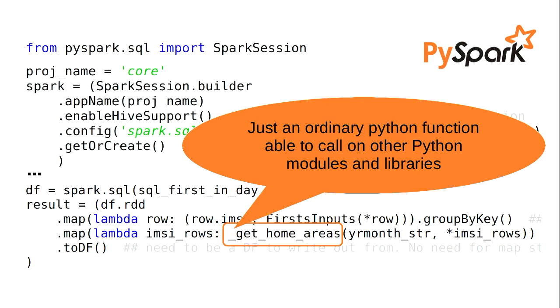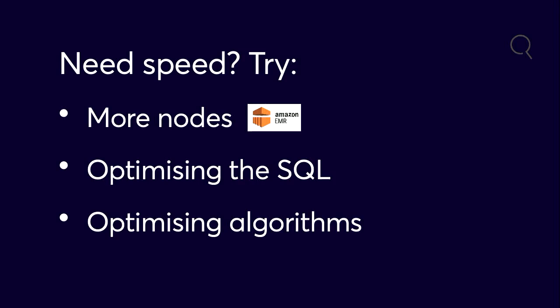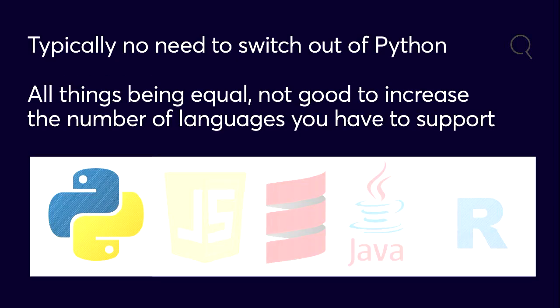Here's an example of some code — there's a little bit of boilerplate at the top, and then the main thing is just an ordinary Python function which can call other Python functions, modules, and libraries like pandas or whatever you want. If you need more speed, you can try more nodes — we're using Amazon EMR, Elastic MapReduce. Another option I get a lot of benefit from is just optimizing the SQL when gathering the data together before I process it, which can make things enormously faster. And finally, maybe the algorithm you're using is just not the best algorithm, so you can work on improving that. There's typically no need to switch out of Python.